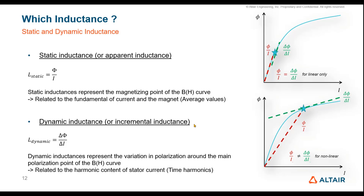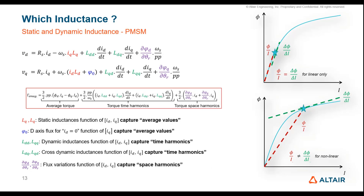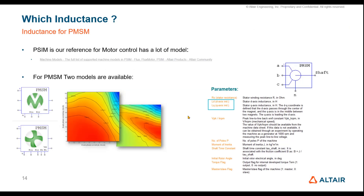Why do we need both static and dynamic inductance? The best way to see their importance is in the Park model: the static inductance gives only the mean value of the torque, while the dynamic inductance helps us capture the time harmonics of the torque — and this applies to voltage and other quantities as well. Since we are talking about the Park model, let's move to control command and see what is needed there.